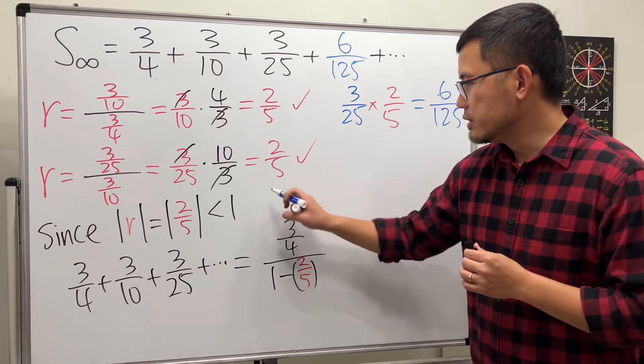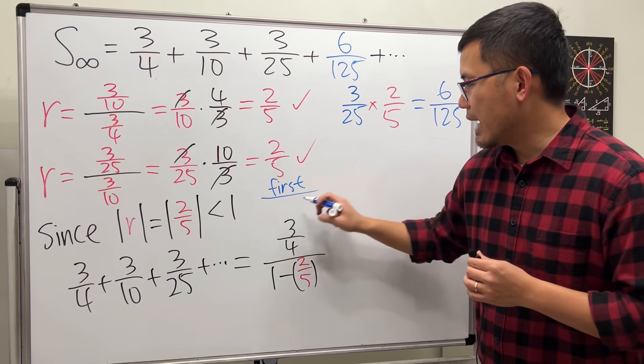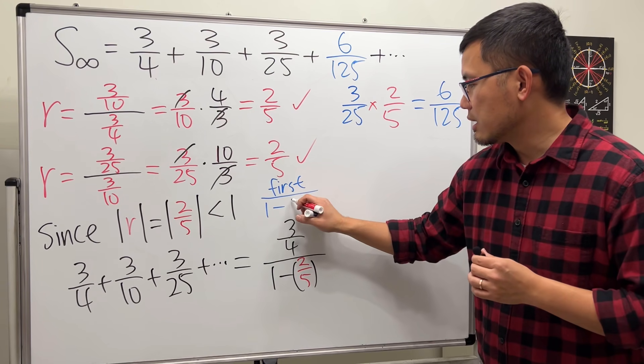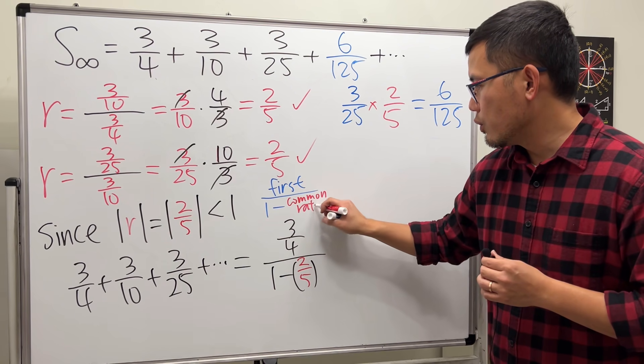So the formula that I'm using is the first term divided by 1 minus the common ratio.